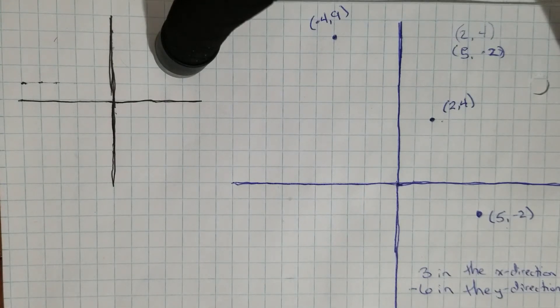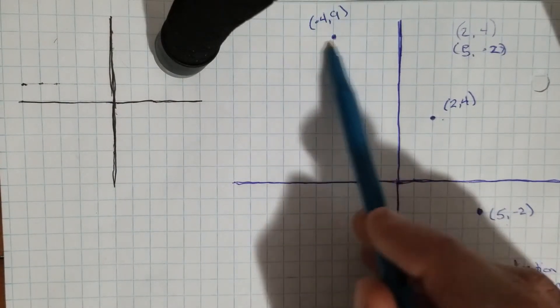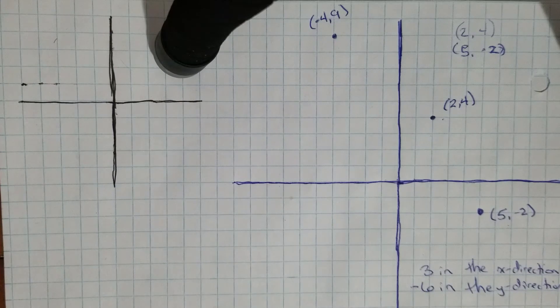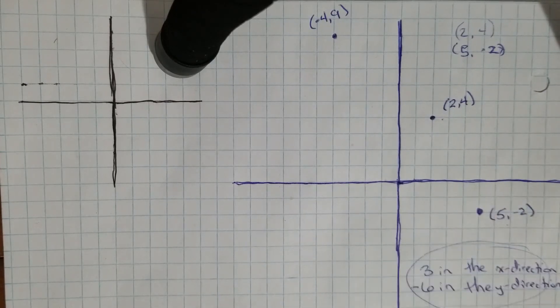Part B says to find the coordinates of X. Now if you remember, before we have this point up here (-4, 9) and we have to figure out where this new point is going to be, point X, using this same translation.